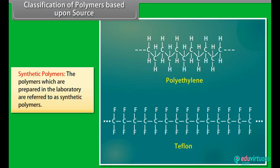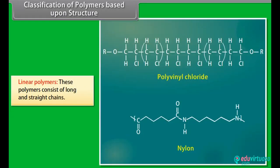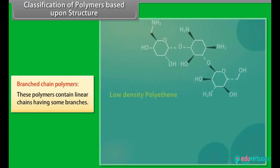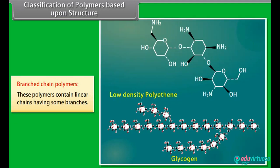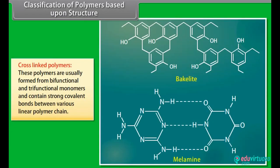Classification of polymers based upon structure: under this type of classification, there are three subcategories. Linear polymers: these polymers consist of long and straight chains, for example polyvinyl chloride and nylon. Branched chain polymers: these polymers contain linear chains having some branches, for example low-density polyethylene and glycogen. Cross-linked polymers: these are usually formed from bifunctional and trifunctional monomers and contain strong covalent bonds between various linear polymer chains, for example bakelite and melamine.